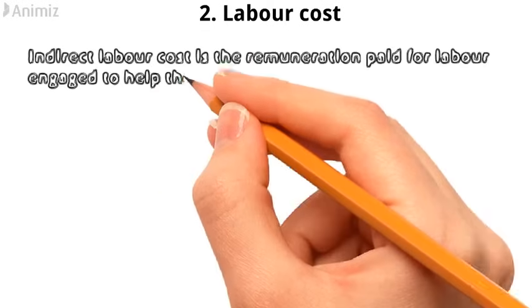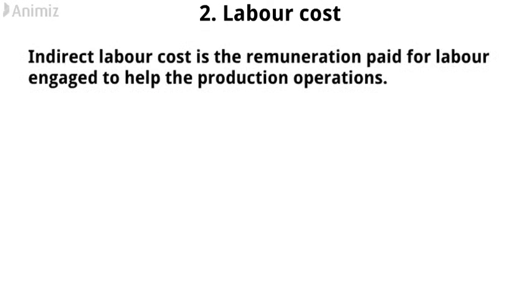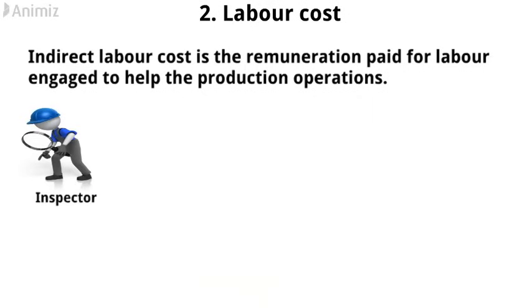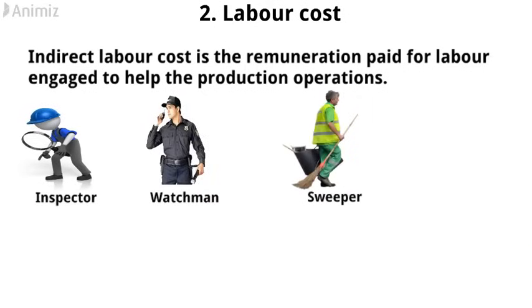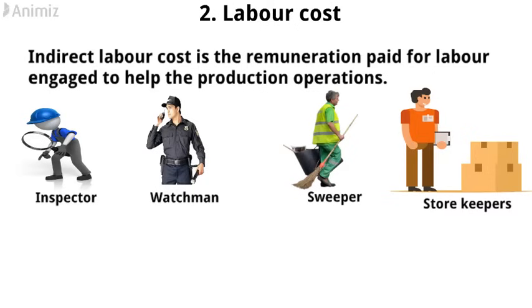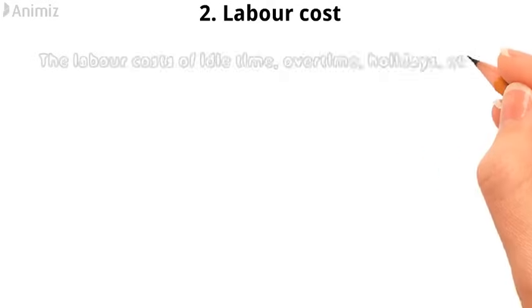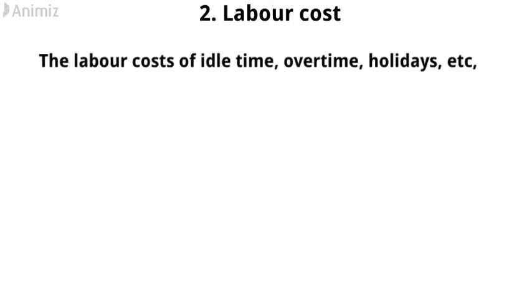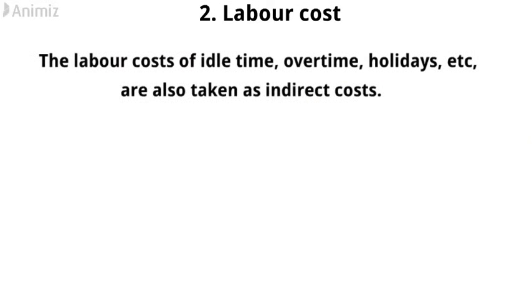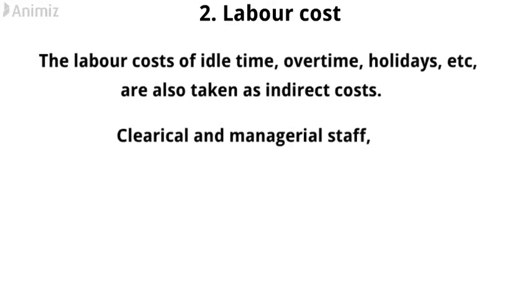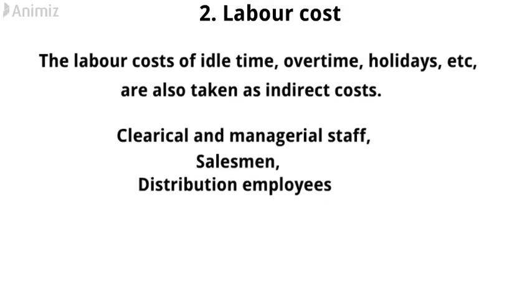Indirect labor cost is the remuneration paid for labor engaged to help the production operations. Examples: inspectors, watchmen, sweepers, storekeepers, etc. The remuneration paid to these persons cannot be traced to a job, process, or production order. The labor costs of idle time, overtime, holidays, etc. are also taken as indirect costs. Similarly, clerical and managerial staff, salesmen, and distribution employees are also included in the orbit of indirect labor.